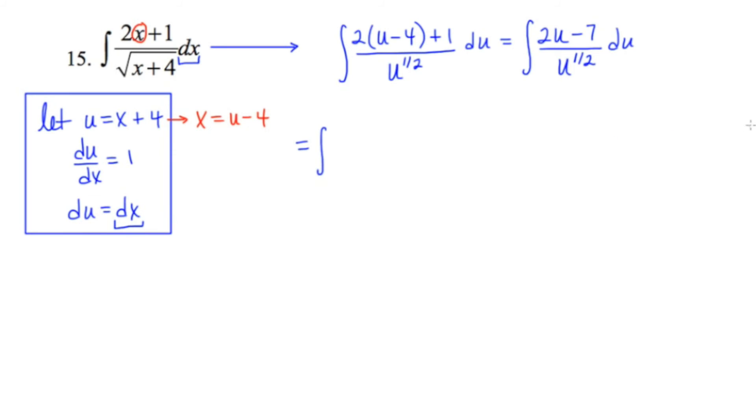Now I'm going to implement a many over 1 procedure, which is essentially like division. 2u over u to the 1 half will be 2u to the 1 half, and then minus 7u to the negative 1 half.